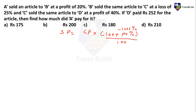They have asked how much did A pay for it. Rather than starting in reverse order, I will start from A. The cost price of A is unknown, so I will consider the cost price of A as X rupees. A purchased at X rupees and then sold it to B at a profit of 20%. I already know the cost price of A and now I want to calculate the selling price of A using the selling price formula.